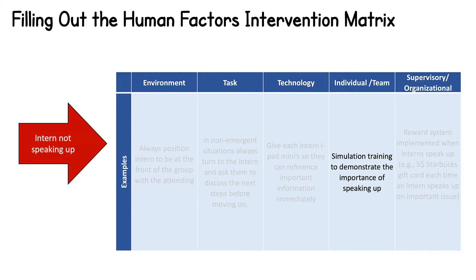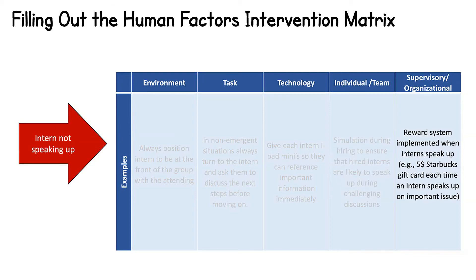Looking at individual and team factors, you could implement a new training program using simulation to demonstrate the importance of speaking up when an individual knows important information. Finally, you could develop solutions aimed at the organization by creating an incentivization program to reward interns who do speak up on important issues — for example, offering each of them a $5 Starbucks gift card every time they speak up on an important issue. When using HFIX, it's important to be as creative as possible. No idea is a bad idea when it comes to developing interventions. We'll sort through figuring out which ones are more likely to be successful later, so for now just be as creative and free-thinking as possible.